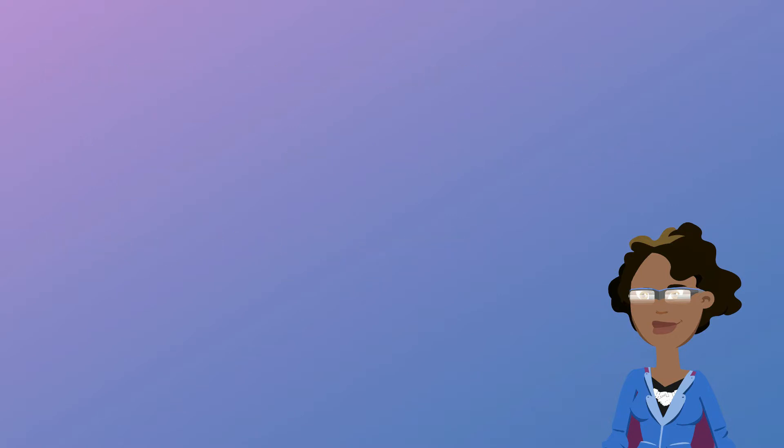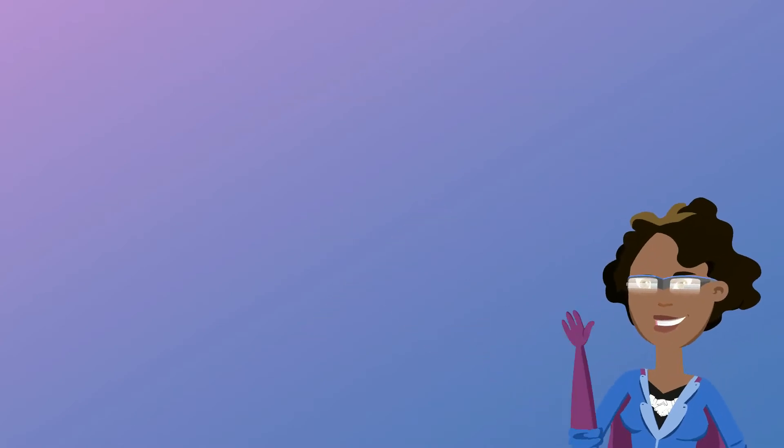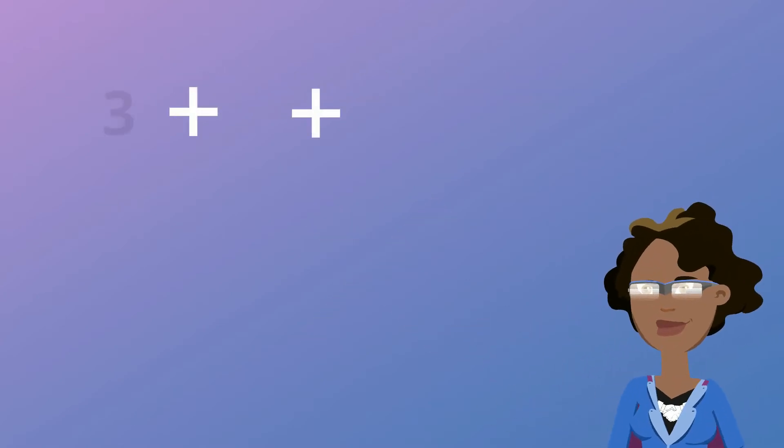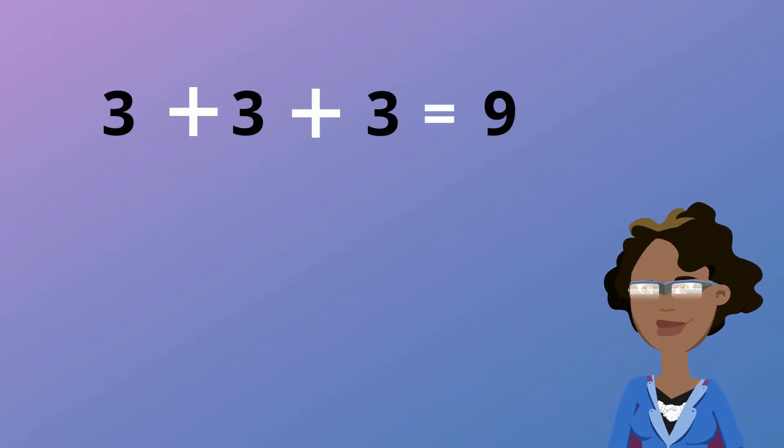This is a sign for multiplication. Repeated addition means to add equal groups of the same number over and over. And that is a simple way to do and figure out multiplication. Let's check it out.